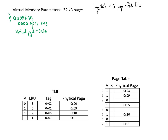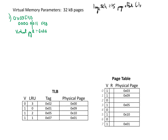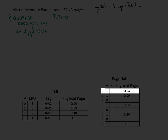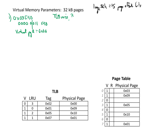From here, we'd go look up in the TLB and see if any of the tags match our virtual page number. None of the tags are 0, so we have a TLB miss. After we miss in the TLB, we'd then go look up in the page table at entry 0, since we're interested in virtual page 0. We see it's valid and it corresponds to physical page 3, so we have a page table hit.